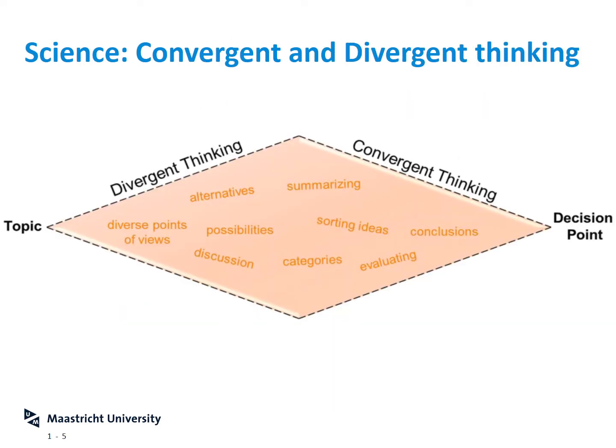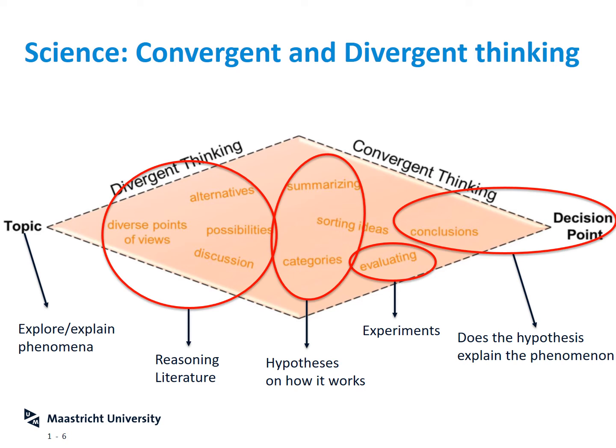If you look at the scientific method from a zoomed-out perspective, much like other endeavors in society, science is a process that starts with a combination of divergent and convergent thinking. When you start studying a topic, you try to get as much information as you can, then distill it into a decision point. In science, you start with a topic — say, a certain physical phenomenon — and try to gather as much information as is already available by reasoning with other scientists and studying literature.